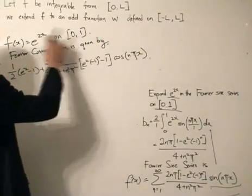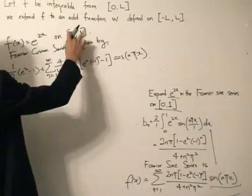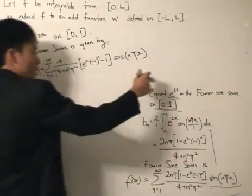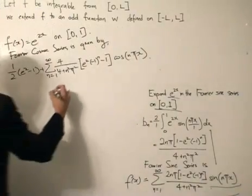So the Fourier sine series of the same function e to the 2x at the same range from 0 to 1 is given by this expression over here. Whereas the Fourier sine series is given by this expression. So what we want to do is most logically compare the two.